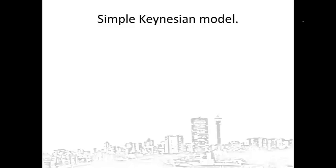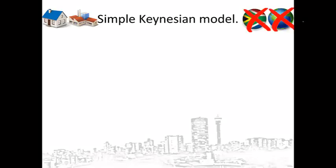Remember, in order to keep things simple, we started off with a simplified Keynesian model — one that includes households and firms, but no government or foreign sector. Later, we will also introduce the government and the foreign sector into the model. For now, we first want to understand the basics of the model before we make it more complicated.